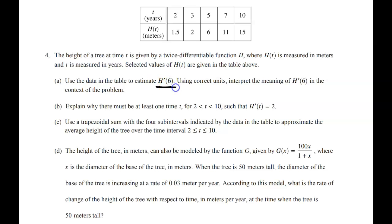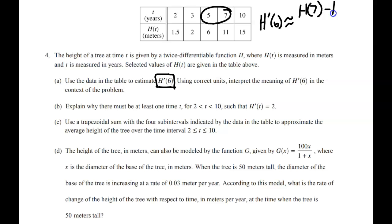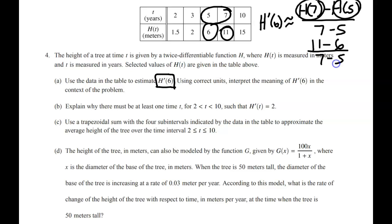Use the data in the table to estimate h prime of 6. In class, we talked about how if you have a table, you can estimate an instantaneous rate of change by picking the two numbers closest to it. Six is closest to 5 and 7. So we would say h prime of 6 is approximately equal to the average rate of change from 5 to 7. h of 7 is 11 and h of 5 is 6. So we have 11 minus 6 over 7 minus 5, which is 5 over 2. The numbers on top are height values measured in meters, and the bottom is measured in years — so this is meters per year.